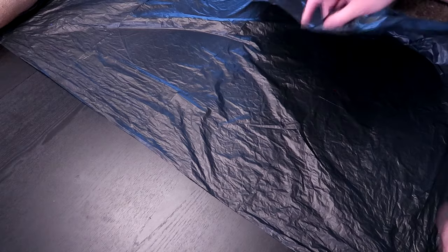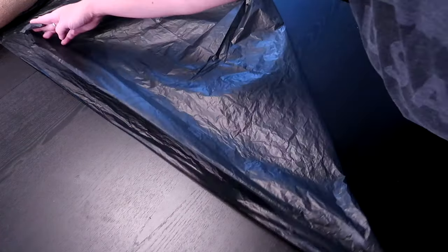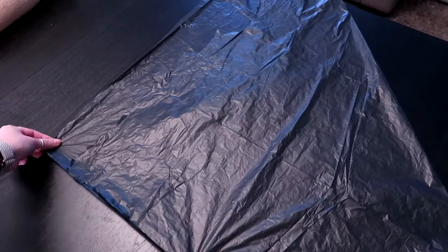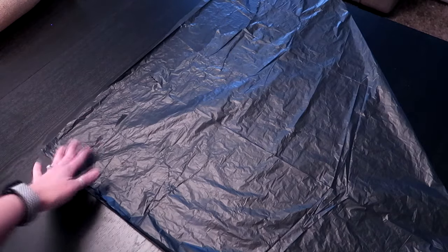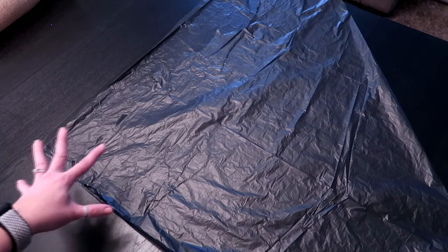You're gonna grab one corner of your garbage bag and then bring it to the edge to make a triangle. So if you remember back in school, this is how you made a perfect square. So what we're gonna do is we're gonna cut along this edge so that we start with a square.